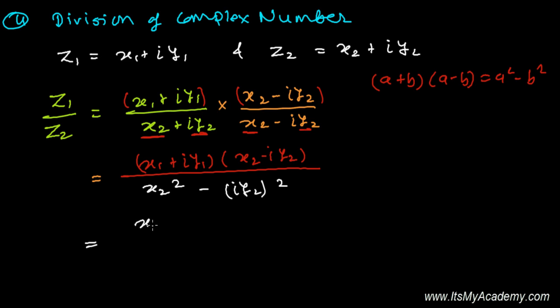Simply, I'm just writing from there: x1·x2 - y1·y2, this is the real part, and the imaginary part is i(x1·y2 + x2·y1).